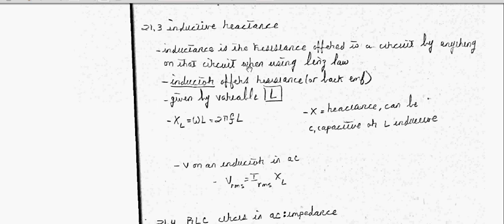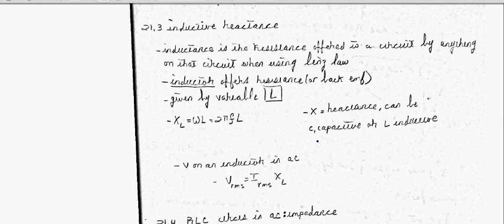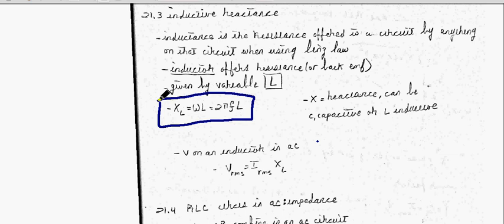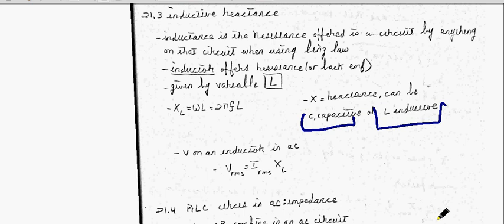Now, this page didn't scan very well, so I'll do the best I can with this. Inductance is the resistance offered to a circuit by anything on that circuit using Lenz's law. Really not that important. Just know that inductance is resistance, and anything that offers resistance is an inductor. That's given by the variable L. When you see L, think inductance. Your inductive reactance is given by omega times inductance, and then you can substitute your 2 pi F for your omega. And again, your X is reactance. When you see C, that's capacitive reactance. When you see L, that's inductive reactance.